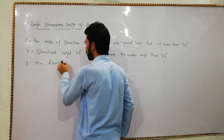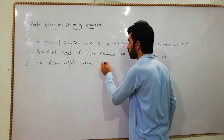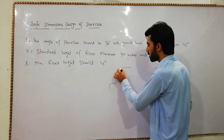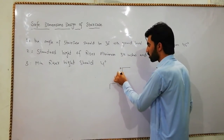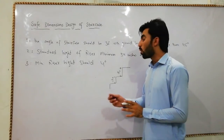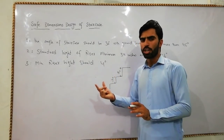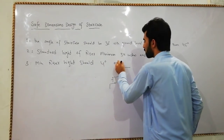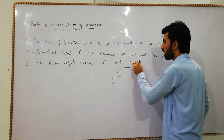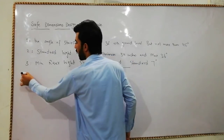The third point is minimum riser height. The riser is the vertical face of each step. The minimum riser height should be 4 inches. The normal and standard riser height is 7 inches. If you want to design for a hospital where there are patients, you should use the minimum of 4 inches, but the standard normal size is 7 inches.